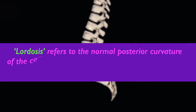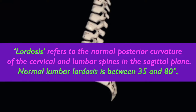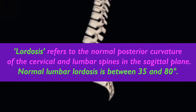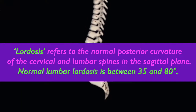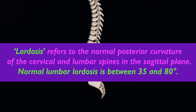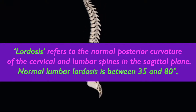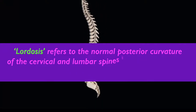As previously mentioned during the introductory video on this topic, lordosis refers to the normal posterior curvature of the cervical and lumbar spines in the sagittal plane. Normal lumbar lordosis, which is measured using the Cobb angle, is between 35 and 80 degrees.